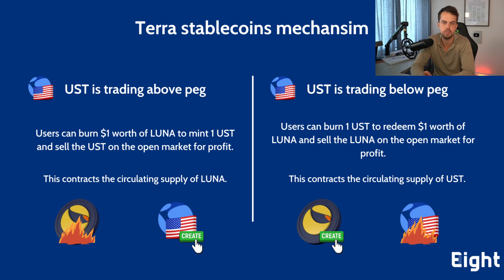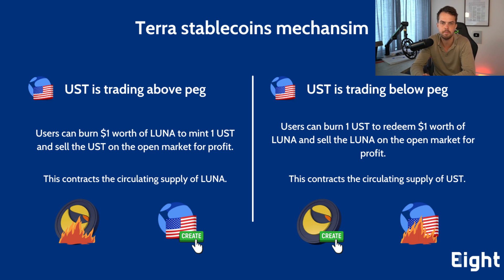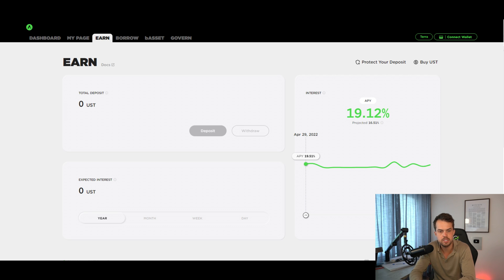When UST would trade below its one-dollar peg, users could burn one UST to mint one dollar's worth of Luna and sell that Luna on the open market for profit. This in turn contracted the circulating supply of UST and stabilized the price back to its peg. This burning and minting mechanism made it profitable for anyone to perform arbitrage, which in turn ensured the one-dollar peg.